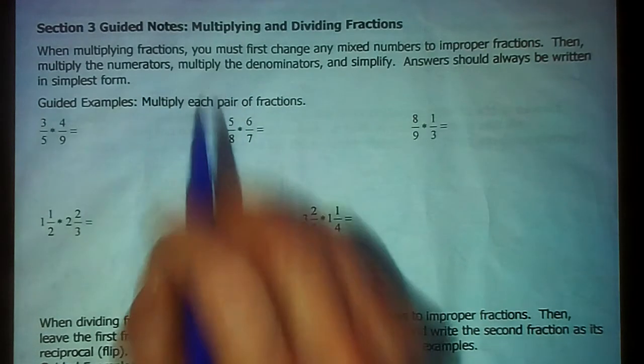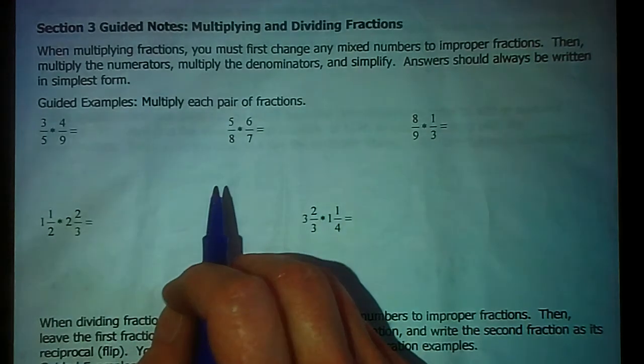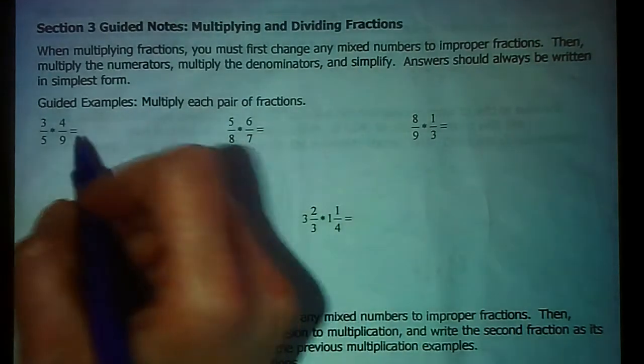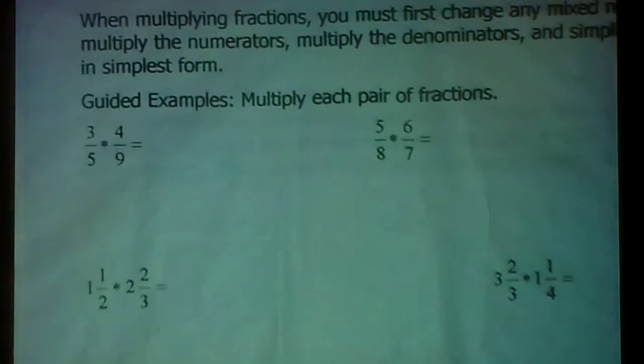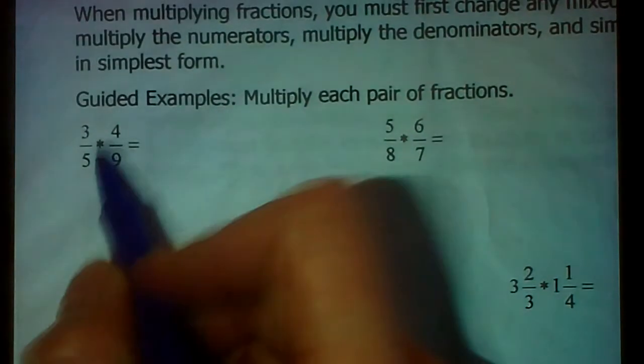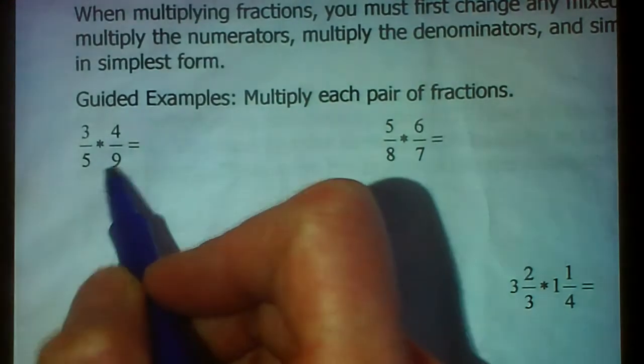You don't need to ask the question, do I have to simplify? Always, always, always simplify your answer. So let's try a few guided examples. And again, remember, you are writing these down with me. So first, we have 3 fifths multiplied by 4 ninths.